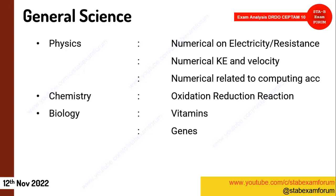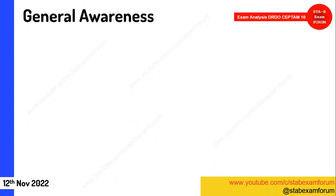In chemistry, across all three shifts, there were questions on oxidation and reduction reactions. In biology, questions related to vitamins and genes appeared. That covers General Science. Students should note that these exact questions will not repeat in upcoming exams — there will be a lot of variation, but this gives you an idea of the exam pattern.